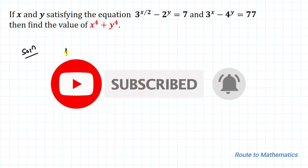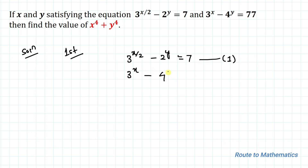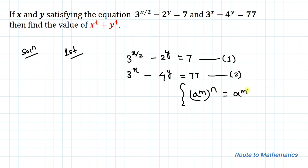Now let's go through the first method. Our first equation is 3^(x/2) − 2^y = 7, and our second equation is 3^x − 4^y = 77. We will use the exponential rule: (a^m)^n = a^(mn).